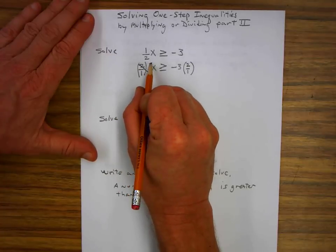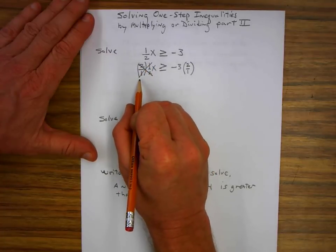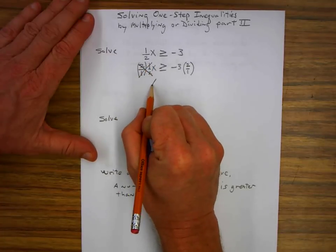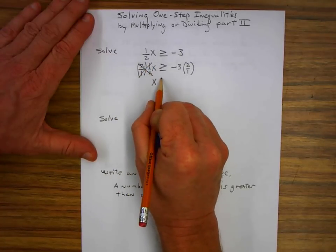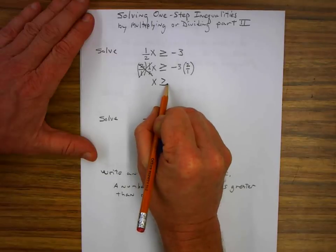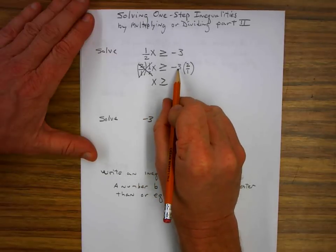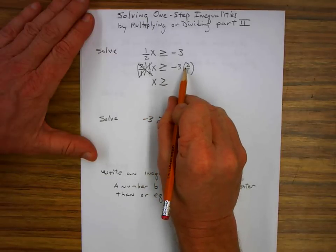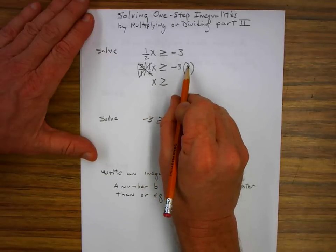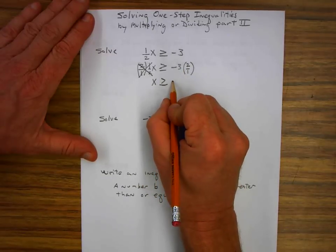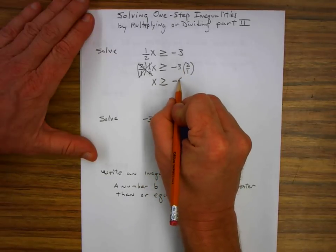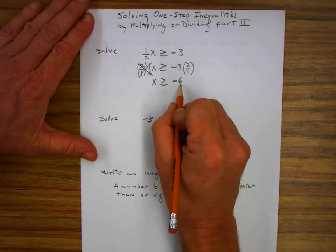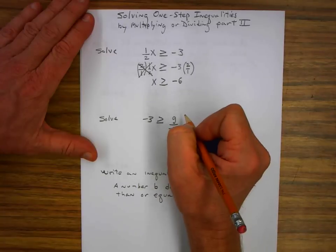These turn into one, so I'm left with x is greater than or equal to negative three times two, which is negative six over one, which is negative six.